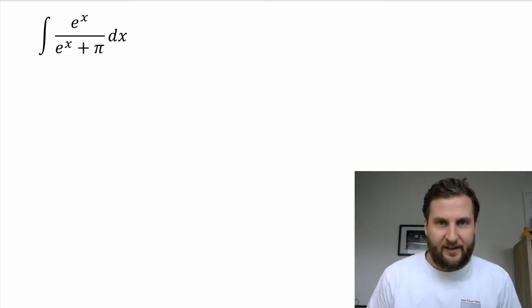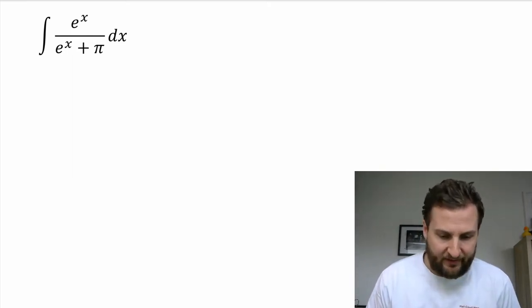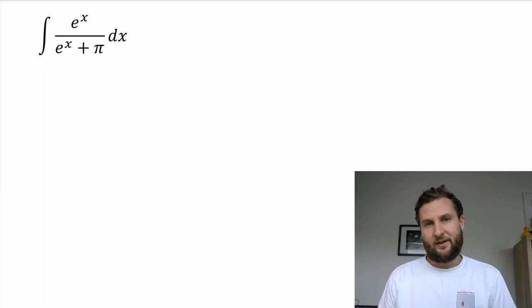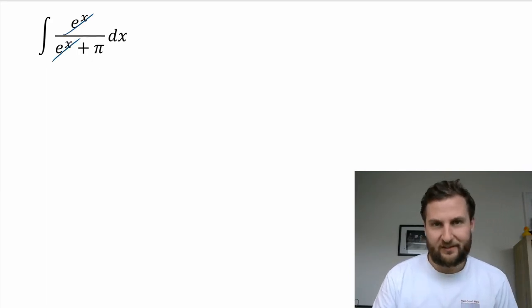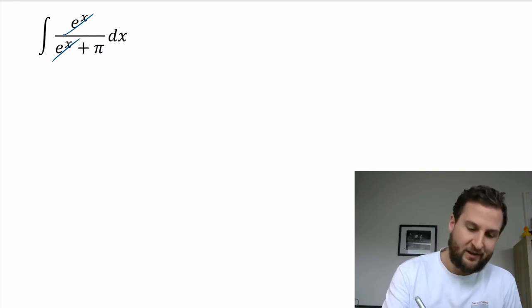All right, e to the x over e to the x plus pi. I saw one of these earlier where I might be tempted to try to simplify like e to the x over the e to the x can simplify to one or something, but because of this addition in here remember your BEDMAS, we can't undo this by any sort of clever algebra and cancellation there.